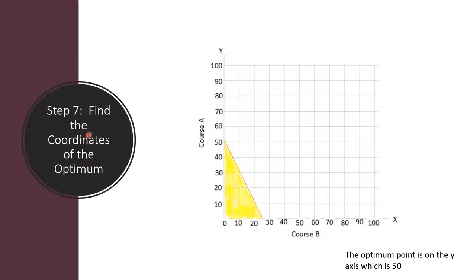Step 7 is to find the coordinates of the optimum. The coordinates of the optimal point can lie on the X or Y axis. In the above example, the optimal point lies on the Y axis because 50 is higher than 25, so the optimum is 50. Where the optimal point of a linear programming problem does not lie on either the X or Y axis, find its coordinates by drawing vertical and horizontal lines.